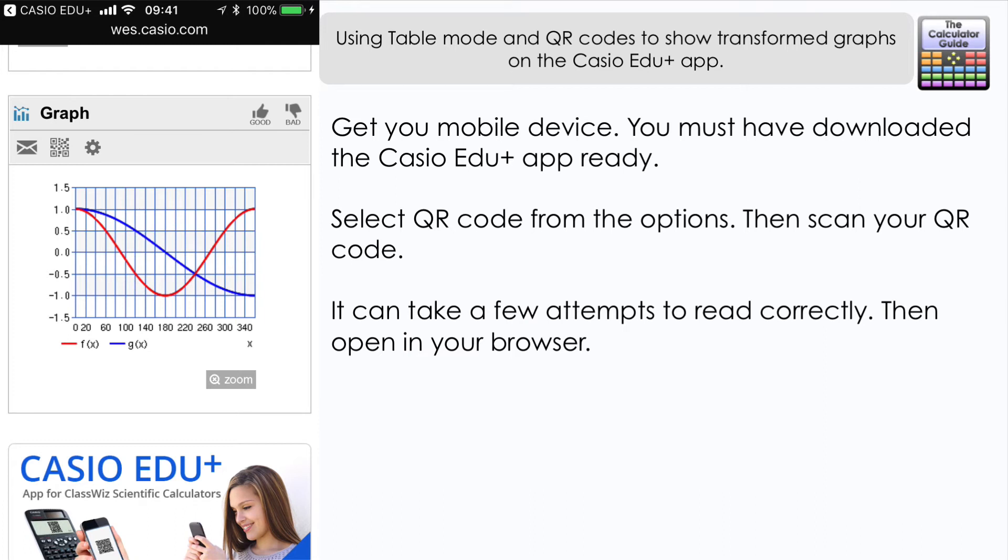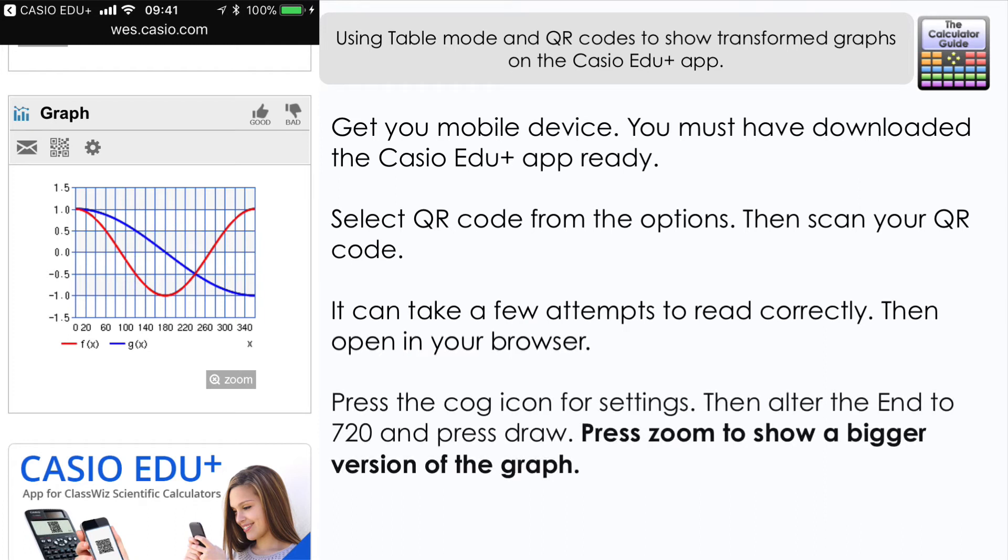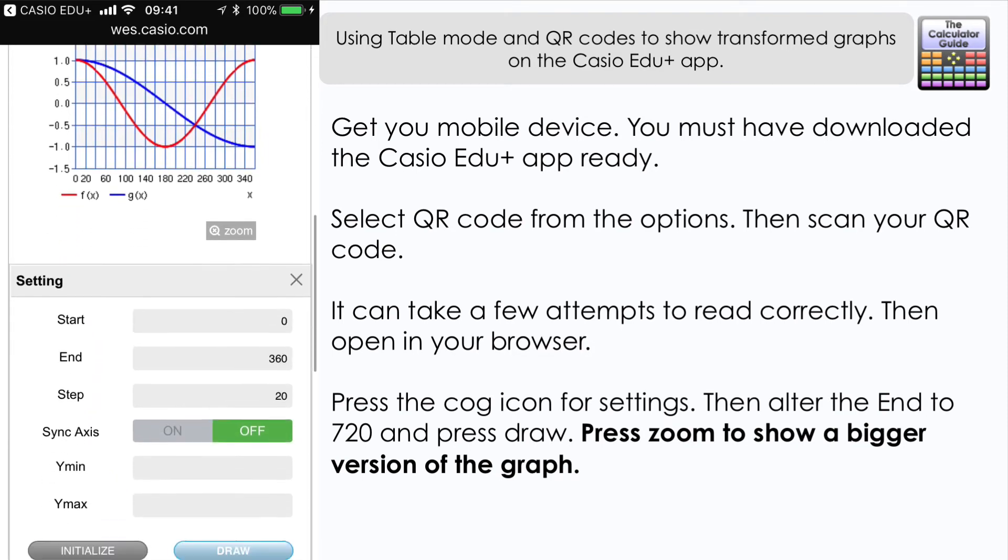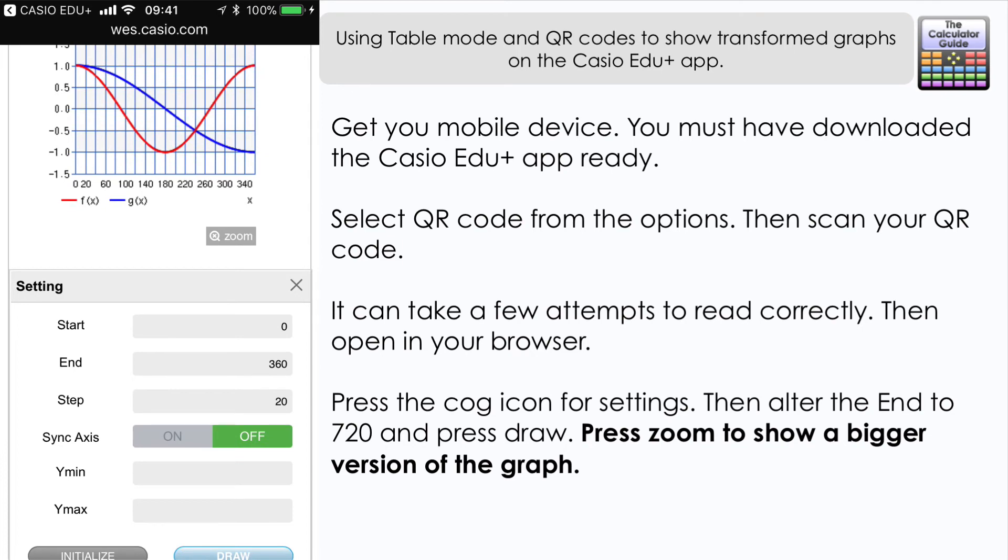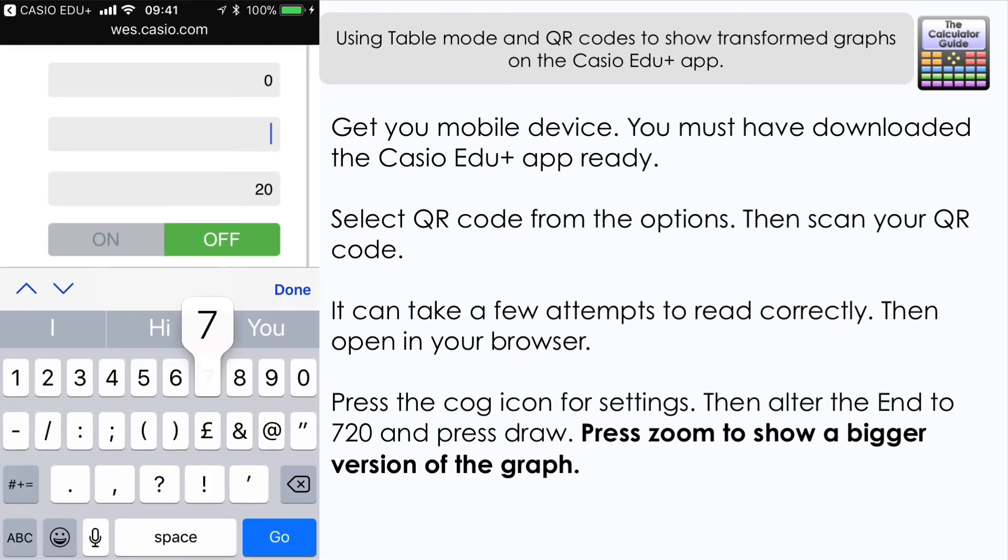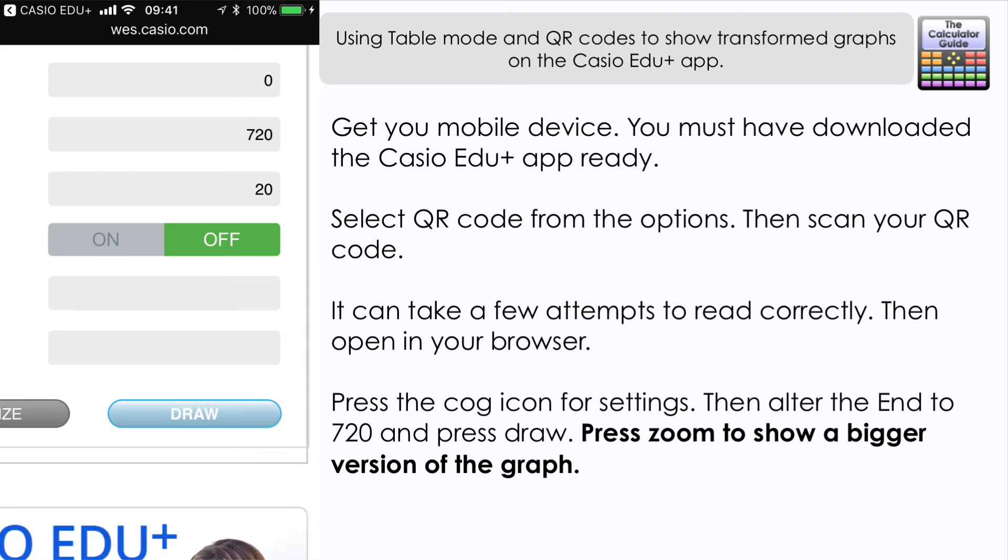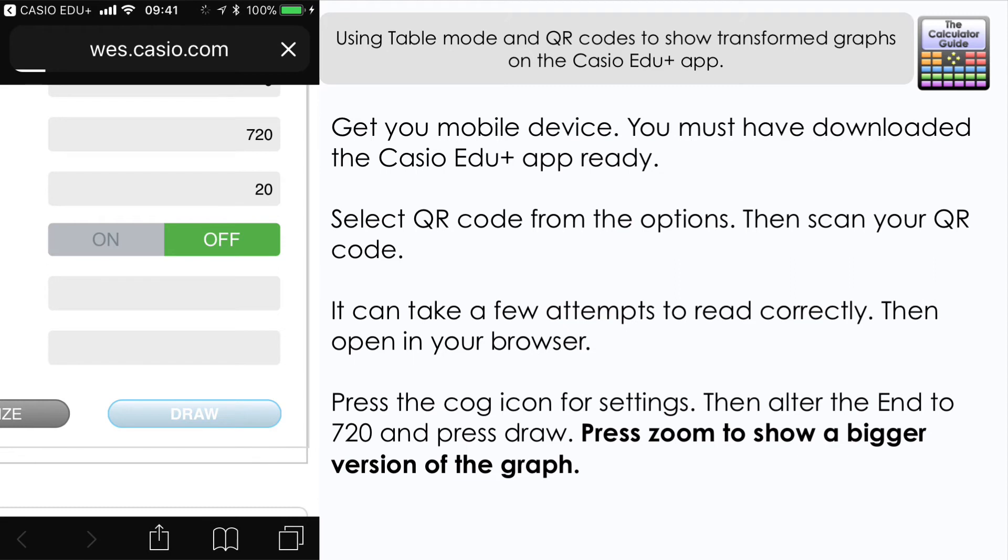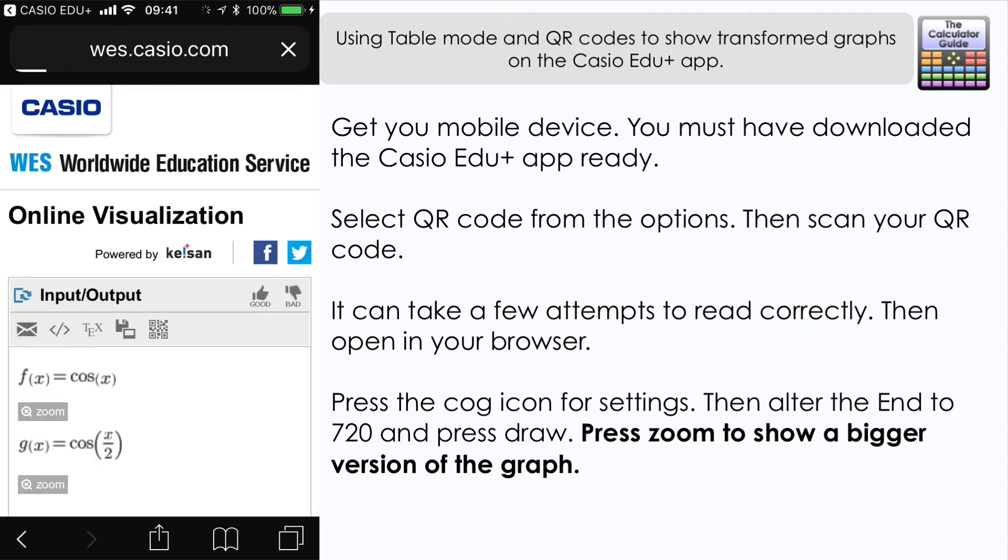If you press on the cog icon for settings and then you can alter the end and we can go a bit bigger than perhaps you could on the actual ClassWiz here. So I'm going to change the end to 720 degrees and done. And then if you just press draw and that will redraw the graph for us and here we have the graph from 0 to 720 and clearly we can see a lot more.